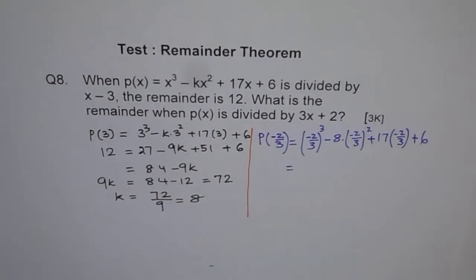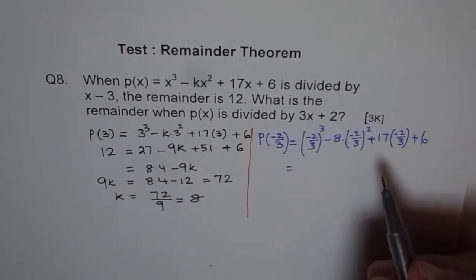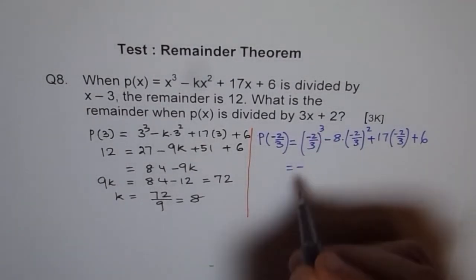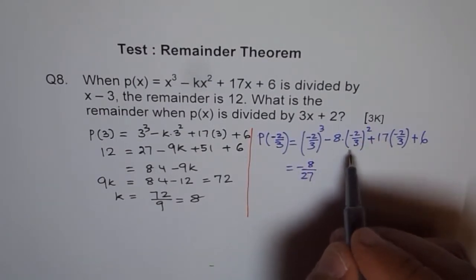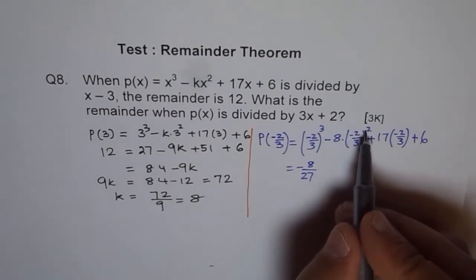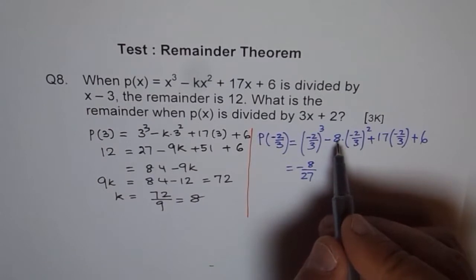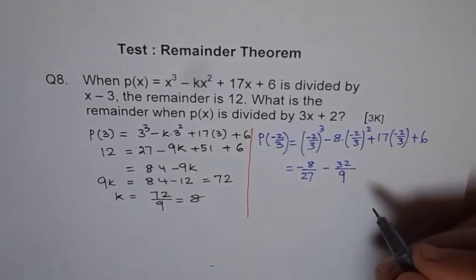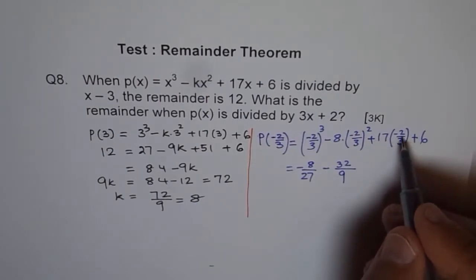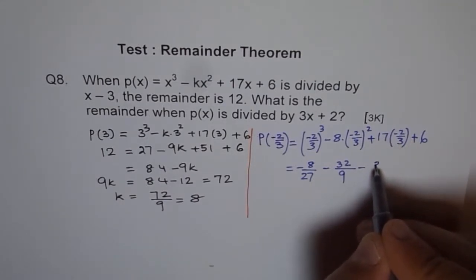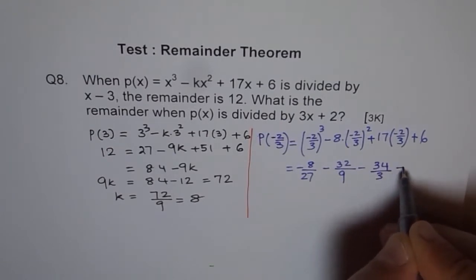So which is equal to, now this will give me, this will be still negative because cube, so minus 8 over 27, and this minus will become positive, so 2 square is 4, so 4 times 8 is 32, so minus 32 over 9, and then we have 17 times this minus will make this negative, 17 times 2 is 34 over 3 plus 6.